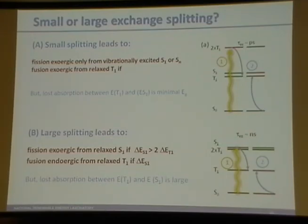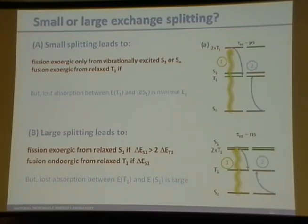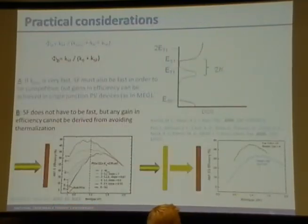For large exchange splitting, fission is exoergic from the relaxed S1 state — the two-times-T1 threshold is at or even a little below S1. So singlet fission is now only competing with things like fluorescence, which has a nanosecond time constant, giving a much better chance of being competitive. The negative is the inverse: in the spectral range between S1 and T1 there's no absorption. So when you absorb at S1, you're generating excitons at S1 but not absorbing any of the lower-energy photons. For any solar cell or photoelectrochemical application, this means you'll need two layers — one that undergoes singlet fission and one that absorbs in the range where your singlet fission chromophore does not.